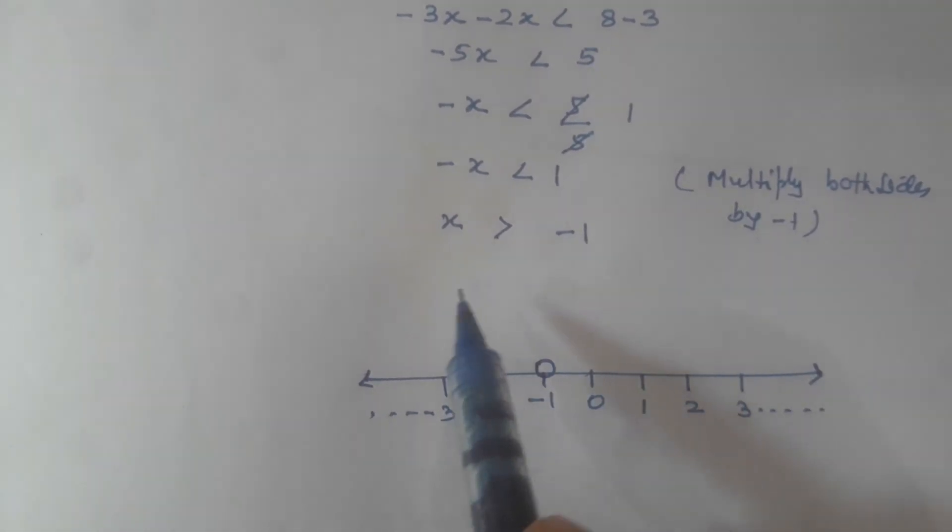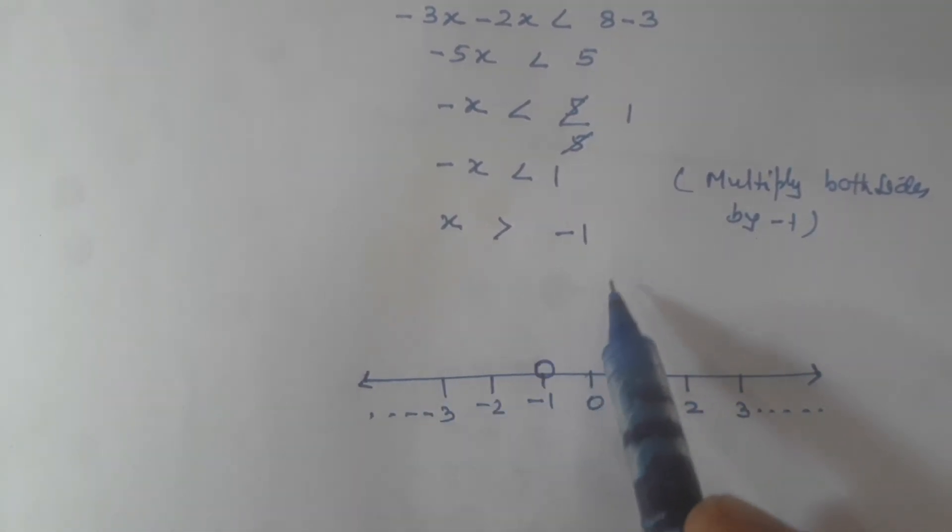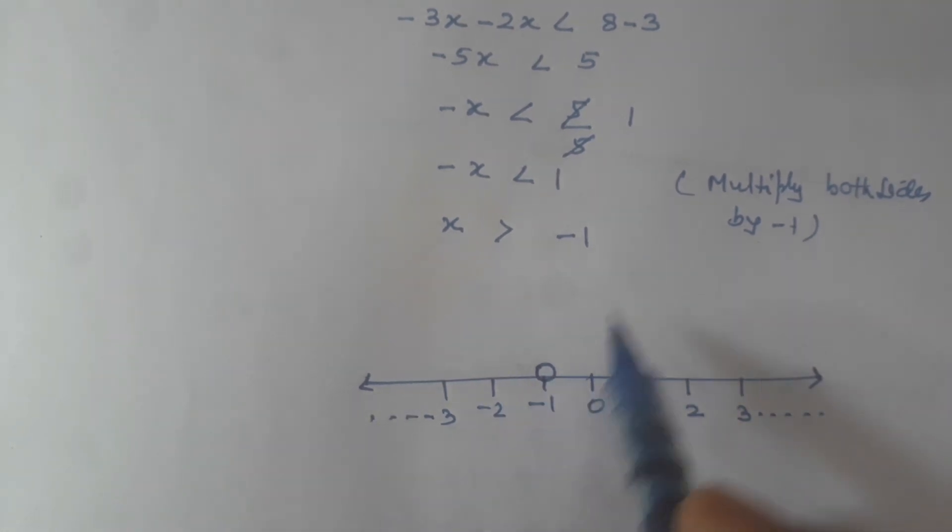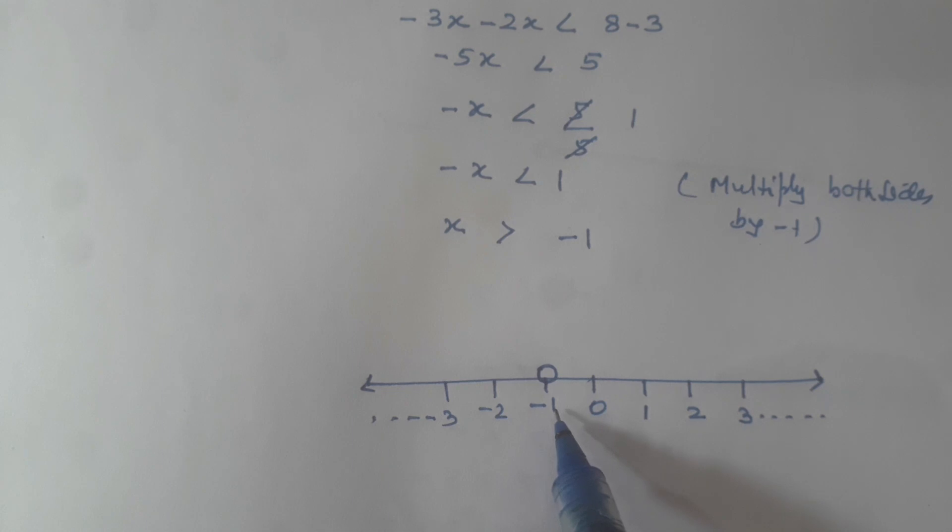Since minus 1 is not included in the solution, we put an empty circle there. If x included minus 1, we would have used a closed, darkened circle.